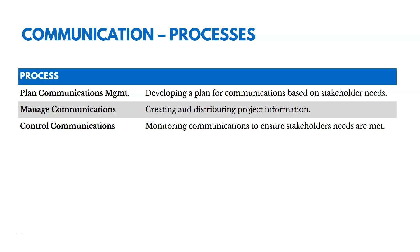With plan communications management, we're defining and determining what we need to communicate to our stakeholders and when — developing a plan for communications. With manage communications, we're creating and actually distributing that information; that's why it's in executing. We're sharing reports or whatever is needed. Control communications is when we're monitoring communications and adjusting them if needed to make sure stakeholders get the right information at the right time.